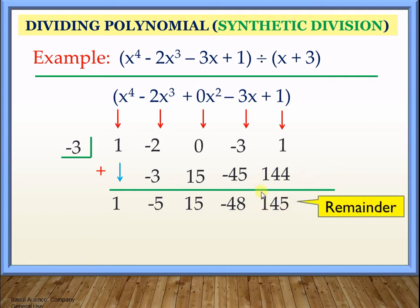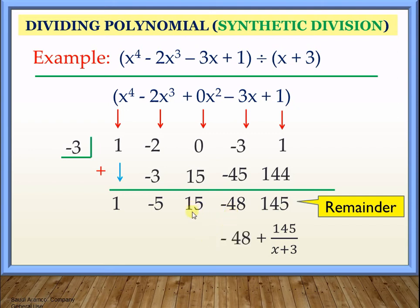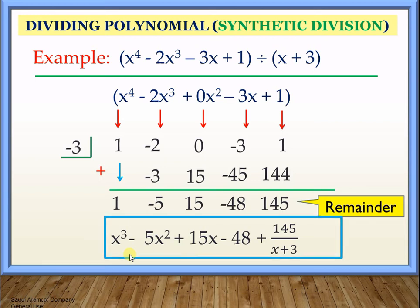This time our remainder is not 0, so x plus 3 is not a factor of this expression. If we have a remainder, we have to write it in this manner. This is positive 145, written as positive 145 all over the divisor, x plus 3. So we finish writing the quotient. This one has no variable: minus 48. This one has x: positive 15x. This one should have x squared: minus 5x squared. And the last one should be positive x cubed. So this will be our answer: x cubed minus 5x squared plus 15x minus 48 plus 145 over (x plus 3).